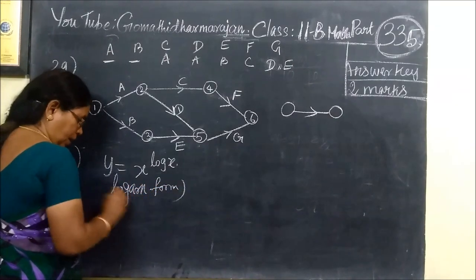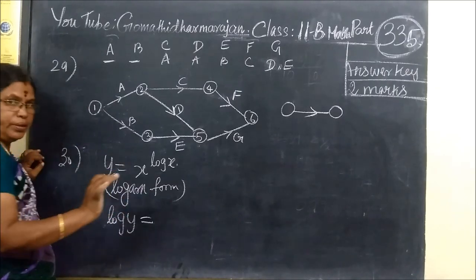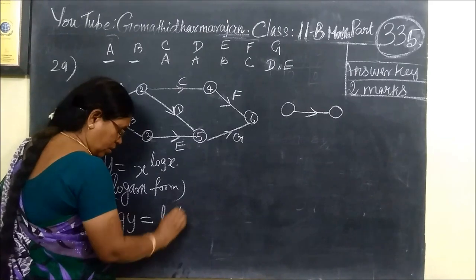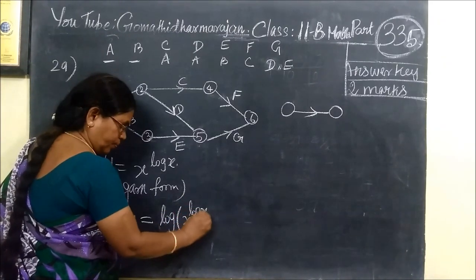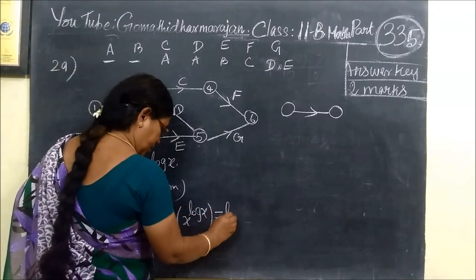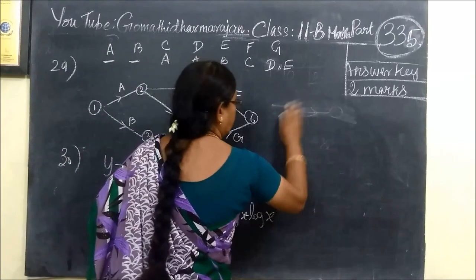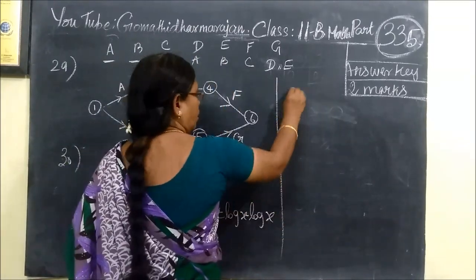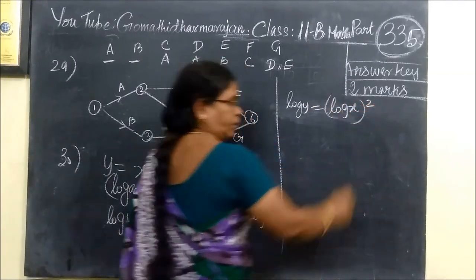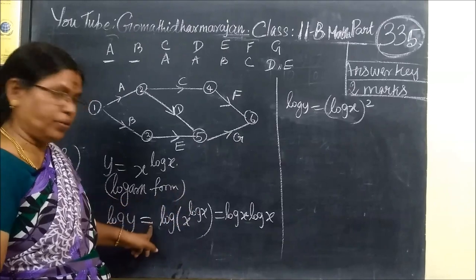Log of x — log x. Then log x is the whole square. So log y equals log x whole square. Now log y equals the whole square.